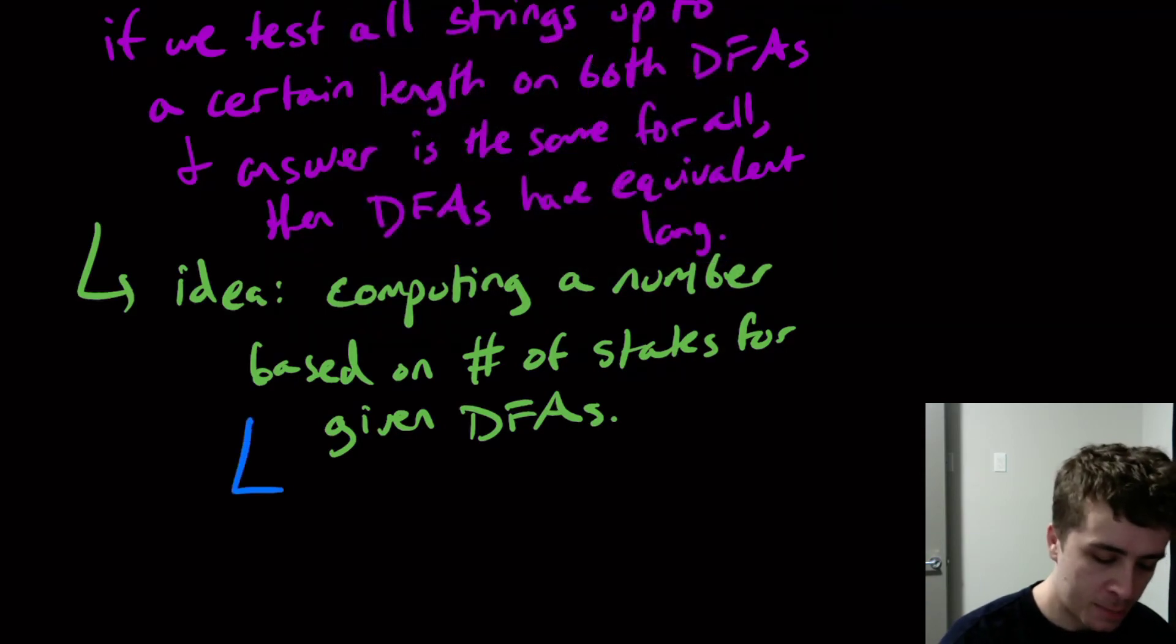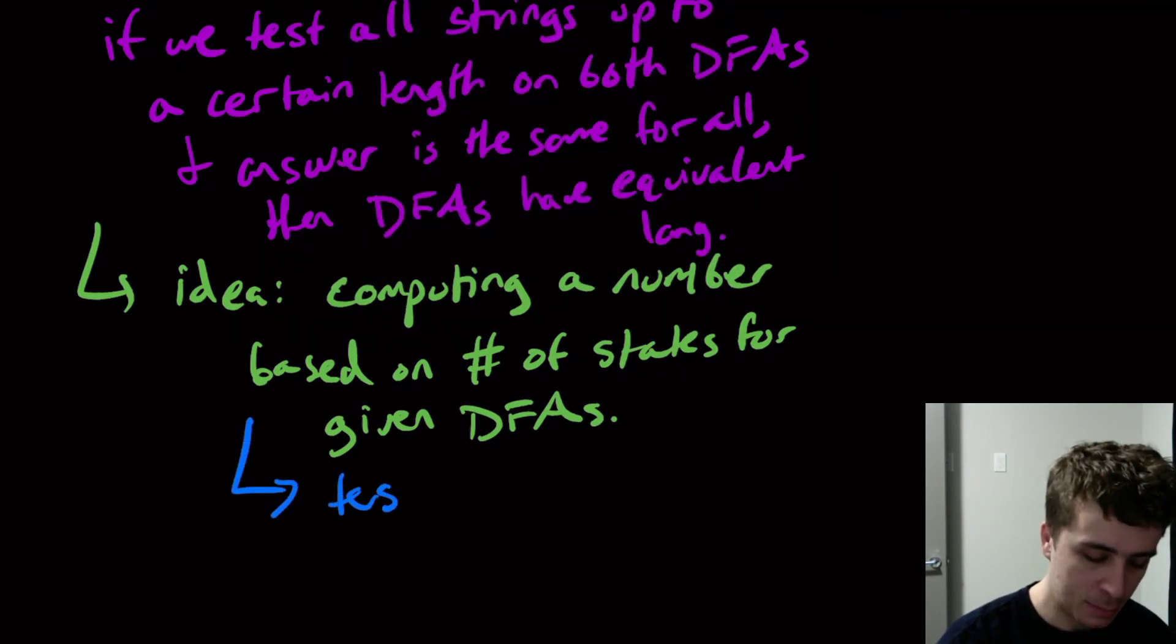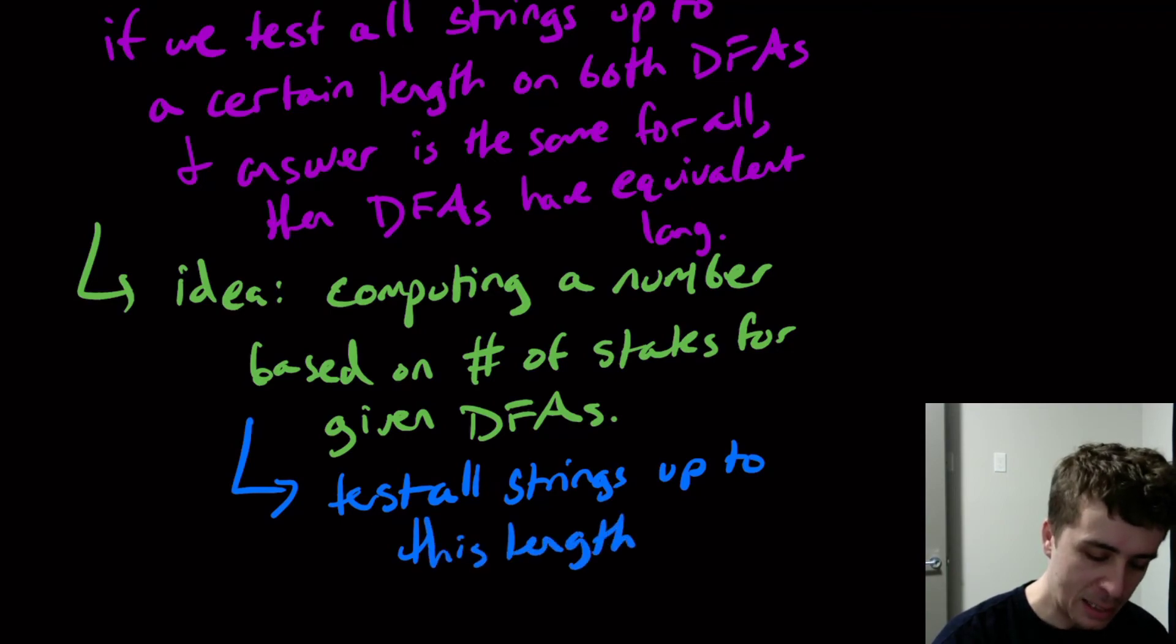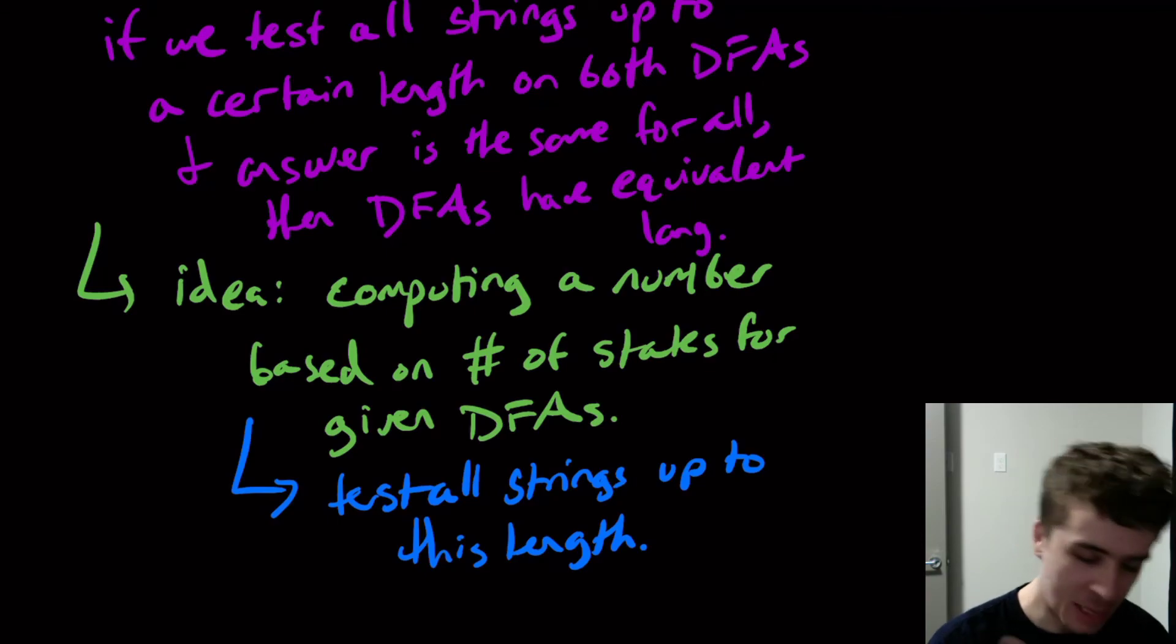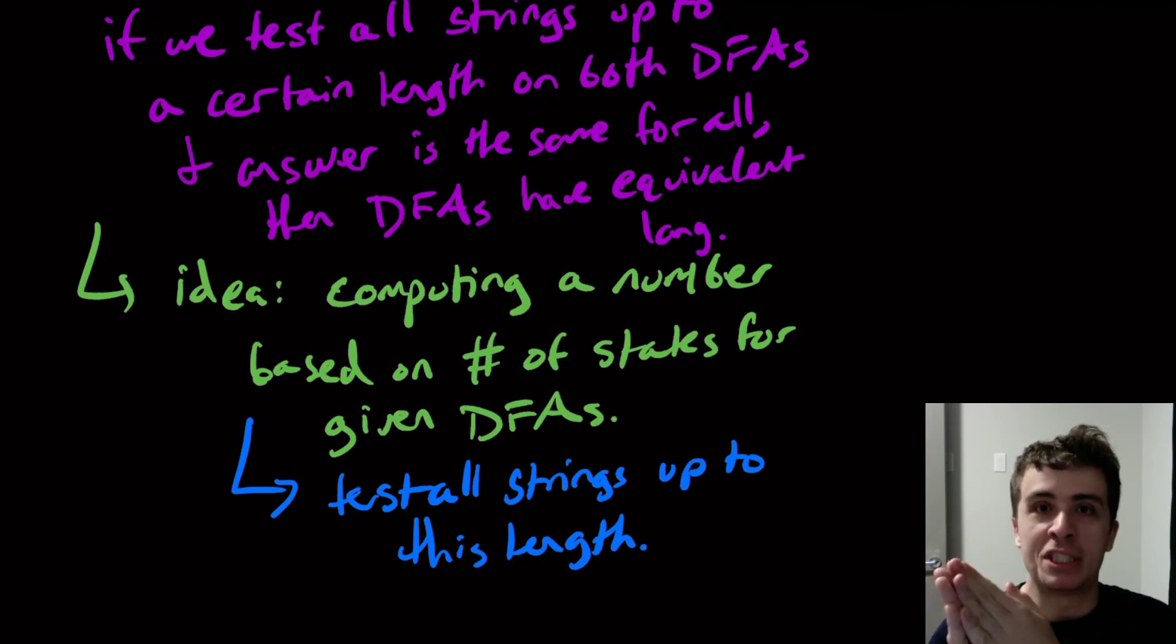What you do from there is test all strings up to this length. This definitely runs in a finite amount of time because the number of strings up to a fixed length, a finite length, that number is in fact finite. And so we can run the decider for A_DFA many, many times because that takes a finite amount of time. There's only a finite number of strings to ever consider. So this is actually a completely different way to show that two DFAs are the same. The answer for both DFAs must be the same. So when one says accept, the other one says accept. And when the other one doesn't, they both don't.